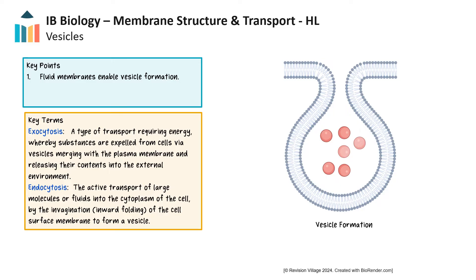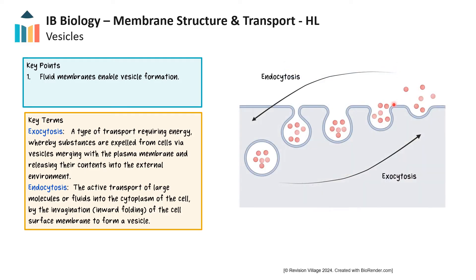Membrane fluidity is not only essential for maintaining membrane structure, but also for enabling dynamic cellular processes such as endocytosis and exocytosis. In endocytosis, a portion of the cell membrane engulfs external particles or fluids, forming a vesicle that transports the contents into the cell. Exocytosis is the reverse process, where internal vesicles fuse with the cell membrane to release their contents outside the cell. For these processes to occur seamlessly, the membrane must be sufficiently fluid to allow bending and fusion, enabling cells to intake essential nutrients and export waste products efficiently.